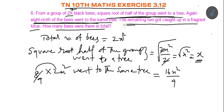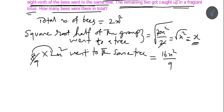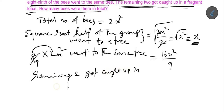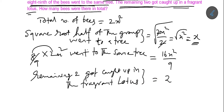Now, the remaining two got caught up in the fragrant lotus. So the total is: x plus 16x²/9 plus 2.